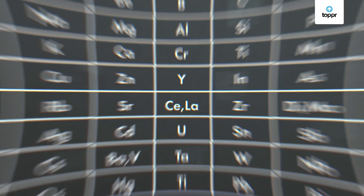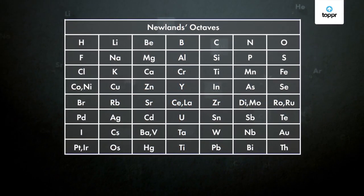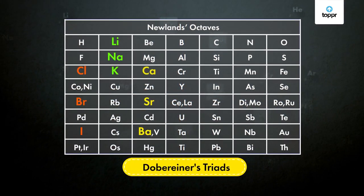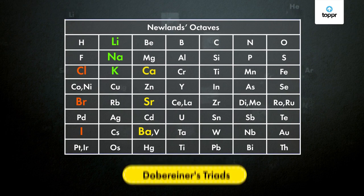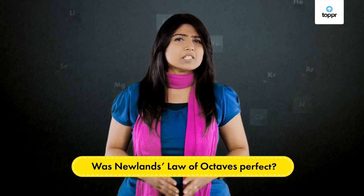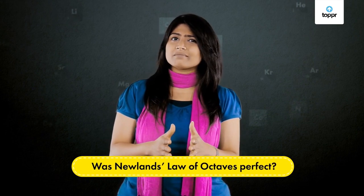The law states that every eighth element in the order of increasing atomic masses has similar properties to the first. Newlands' law of octaves was precise enough to successfully include Döbereiner's triads — quite an achievement! On one hand, this law seemed to have temporarily solved all the problems of classification. But was Newlands' law of octaves perfect?